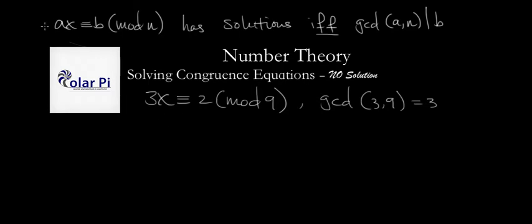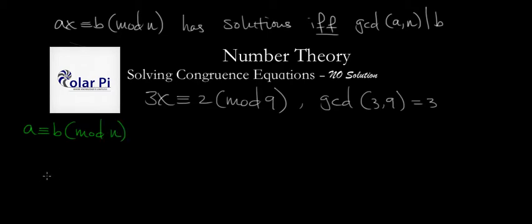But if you have a hard time just trusting this statement, how can you show that this has no solutions? Well, one way is to try different integer values of x and see that you'll fail every single time. But a more profound way to show that this has no solutions is to recall that A is congruent to B mod N can be translated into an equation that says A equals B plus a multiple of N.